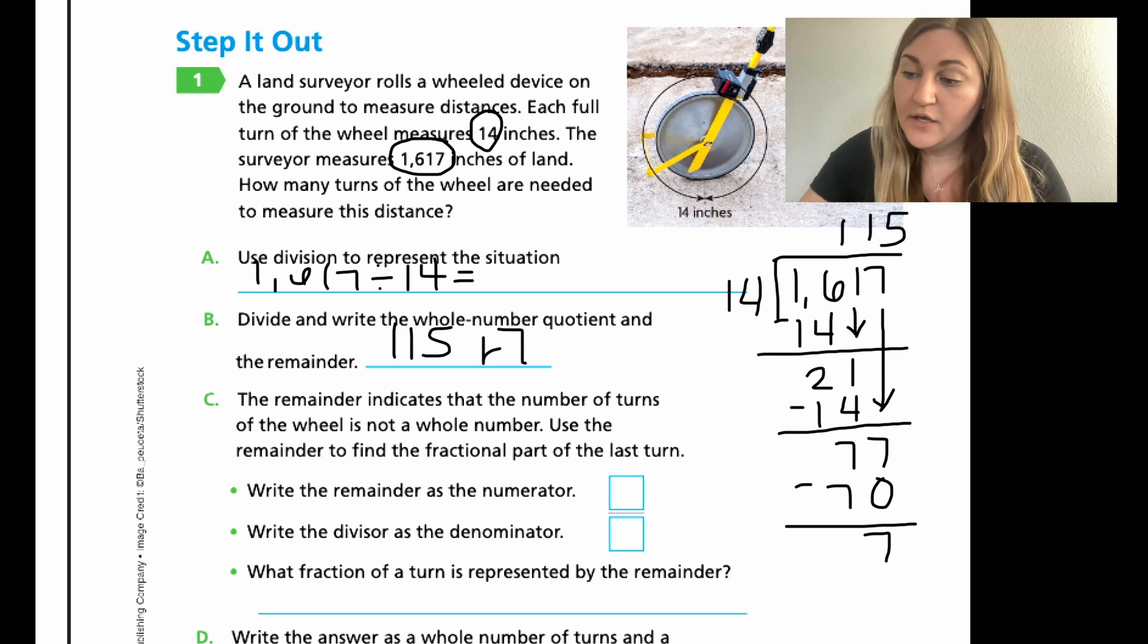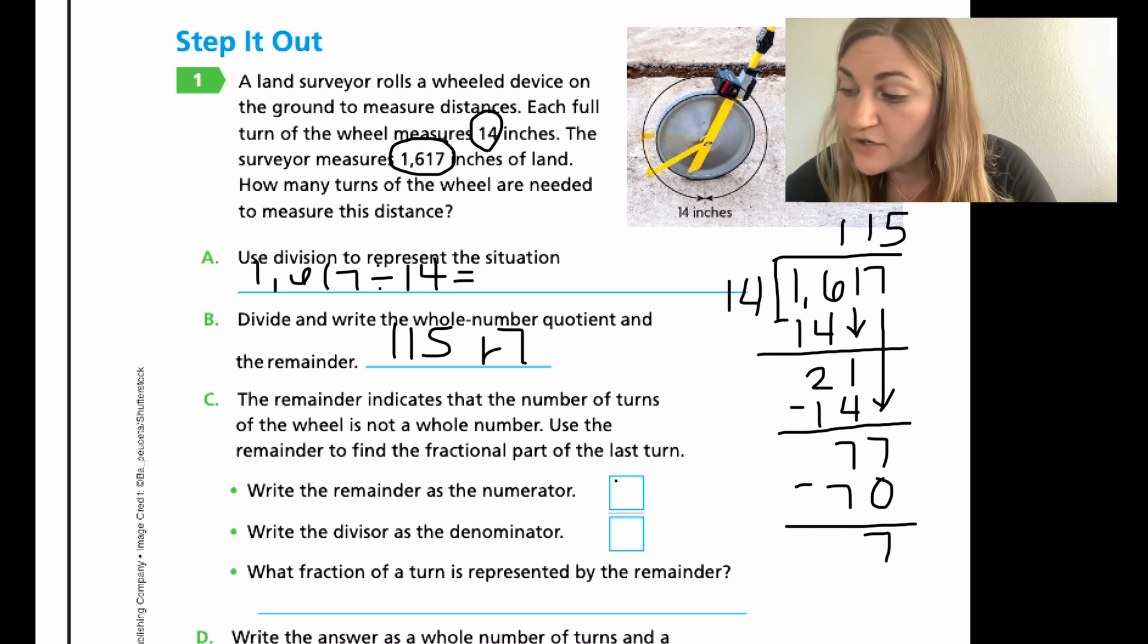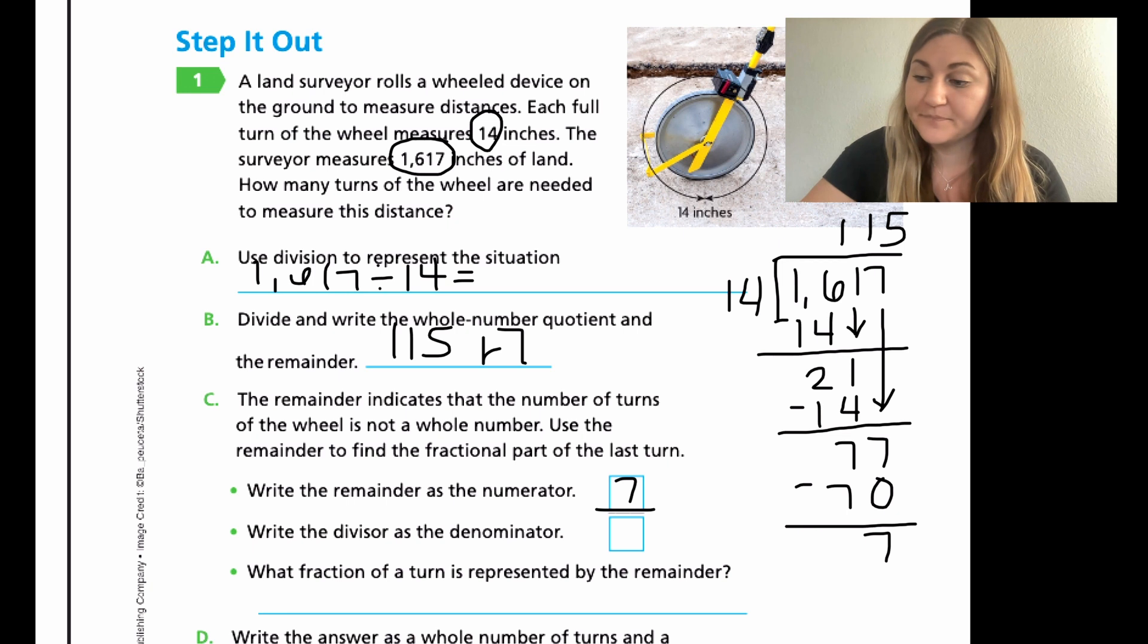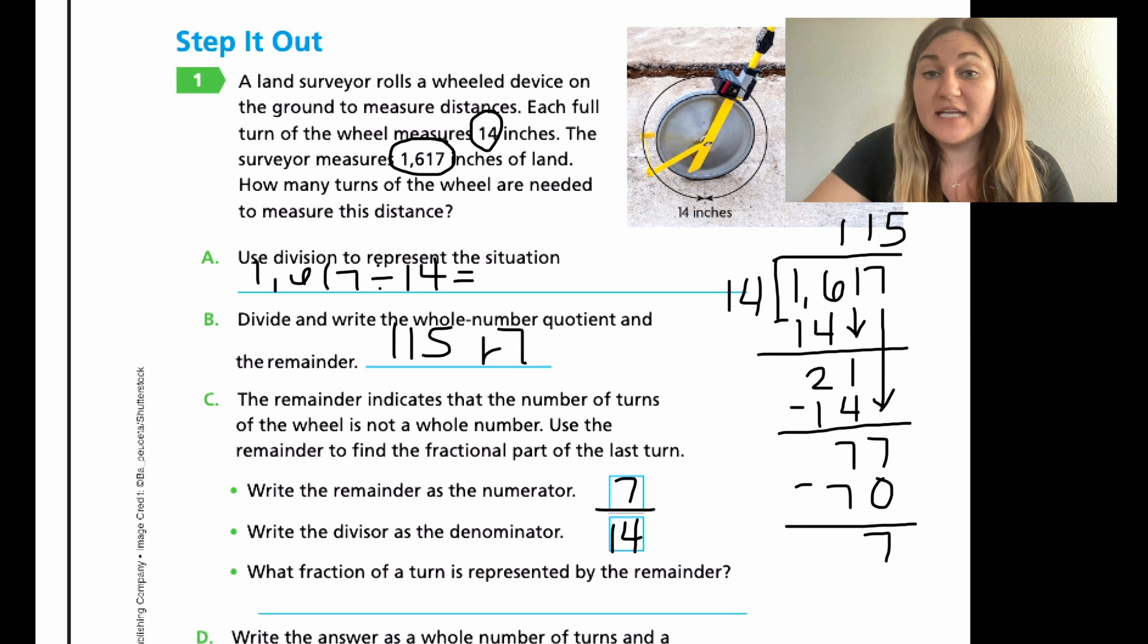Moving on to C. The remainder indicates that the number of turns of the wheel is not a whole number. Use the remainder to find the fractional part of the last turn. Write the remainder as the numerator. So the remainder in this problem was 7. Write the divisor, that was our 14, as the denominator. With our remainder, it was 7 inches out of the 14 inches of the full turn. Going back to the problem, a full turn of the wheel was 14 inches. If we got one whole, it would be a full 14 inches, but it's not. In this case, the remainder we have is just 7 inches. So it didn't make a full turn.